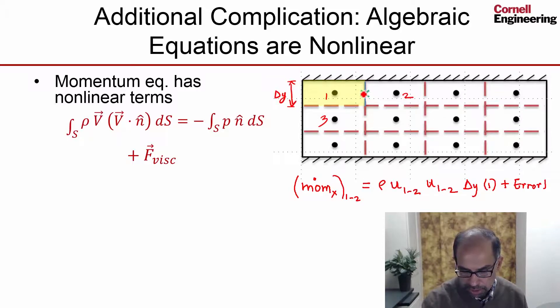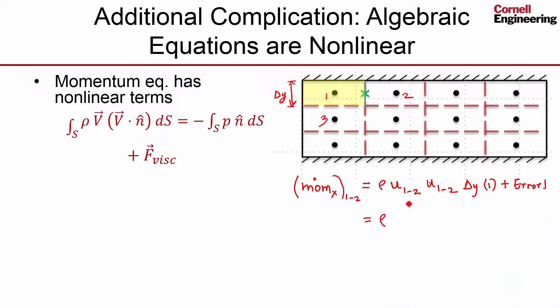And u12, and the velocity here, we'll assume we'll just interpolate between 1 and 2 like we did before. So rho, so this velocity over here is just u1 plus u2 divided by 2. And similarly over here, so I'll just square that, times delta y.